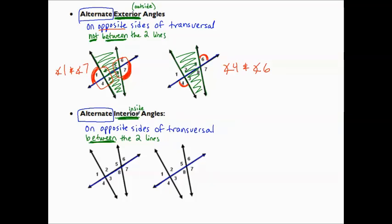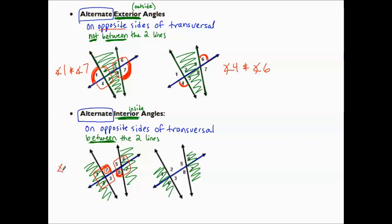Let's examine now the interior angles — the ones inside. Now I'm going to scribble out what's on the exterior. Looking at one intersection, I'll pick angle two which is above the transversal. In the other intersection, what's an angle below the transversal? Angle eight. So, angle two and angle eight are alternate interior angles. Similarly, I can pick an angle below the transversal and an angle above — opposite sides of the transversal from the two intersections. Angle three and angle five are alternate interior angles.